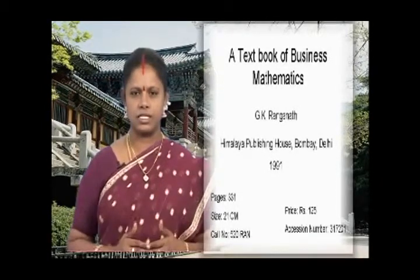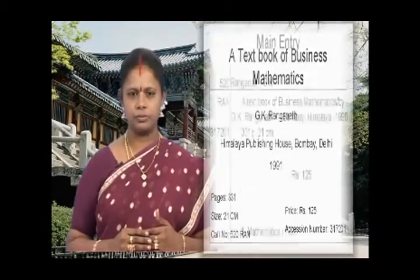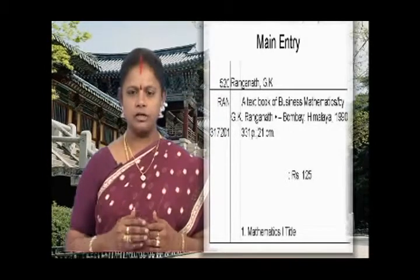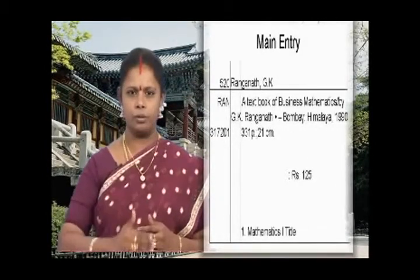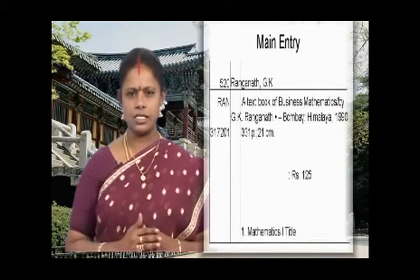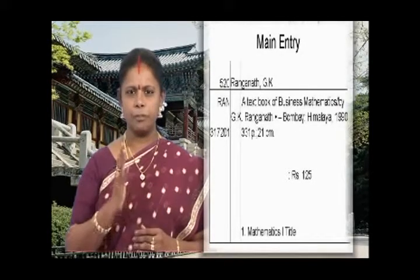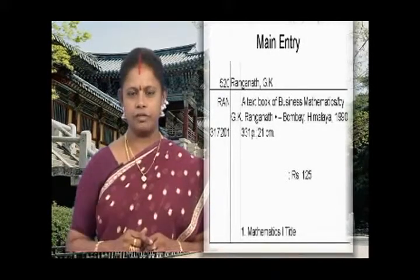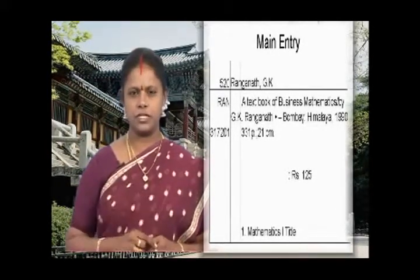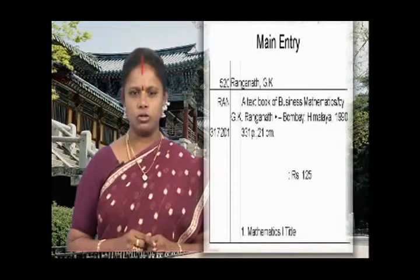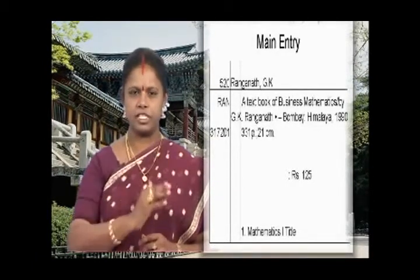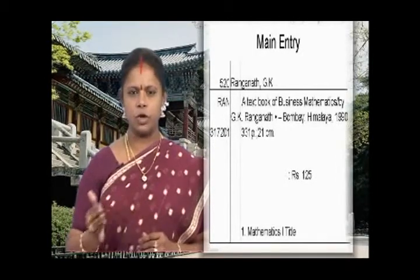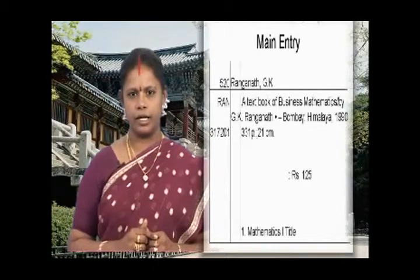Let us do this title page in the cataloging card format. We start with the main entry, giving the class number and book number. The class number should be written before the first vertical indent on the horizontal line. The class number given in this title page is 520, so write 520 before the first vertical.